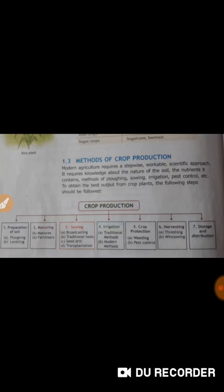Fourth step of crop production is irrigation and the two steps of irrigation are traditional methods, modern methods. Then crop protection. Weeding is there, pest control is there.